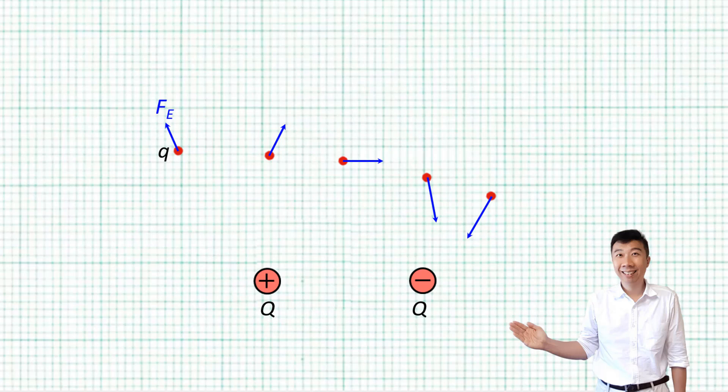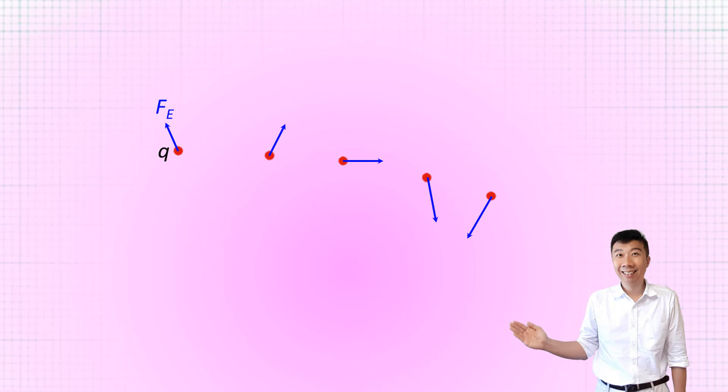Maybe these two, alright, these two big Qs here. So we can think of the two big Qs as producing electric force on the little Q, or we can think of the two big Qs producing an electric field in this region of space.